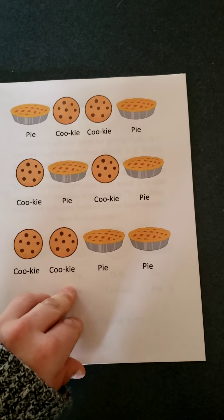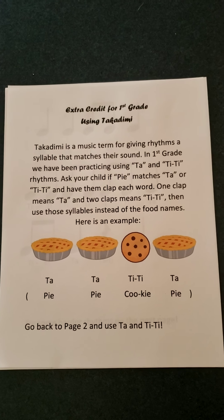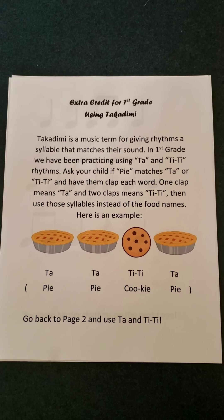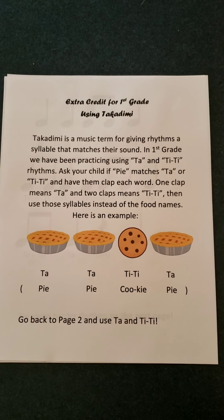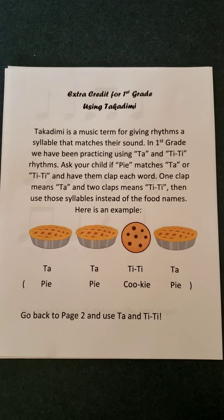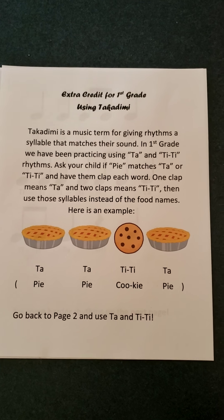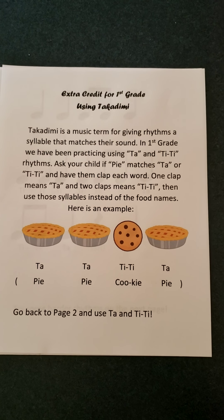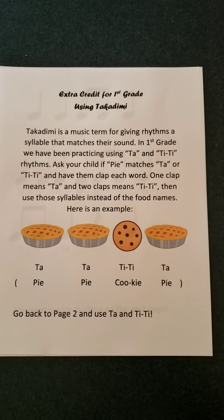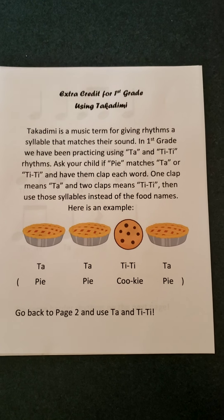If you are a first grade student, you know how to change these from cookie and pie to ta and ti-ti. Start with a steady beat. One, two, steady beat. Let's use pictures first. One, two, picture first. Pie, pie, cookie pie. Try on your own. Ready, go. Now use ta and ti-ti. Remember, ta is one hit. Ti-ti is two hits. One, two, with me, go. Ta, ta, ti-ti, ta. Try on your own. Ready, go.